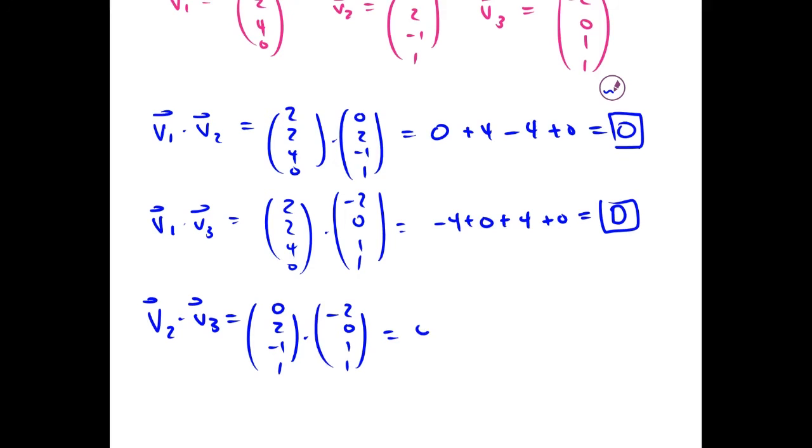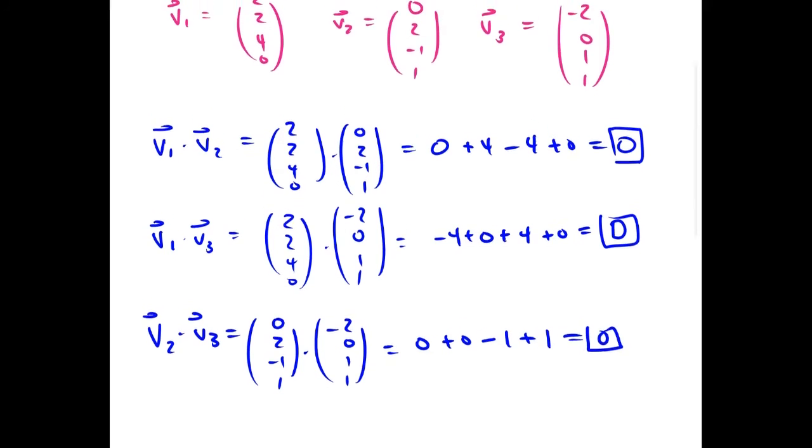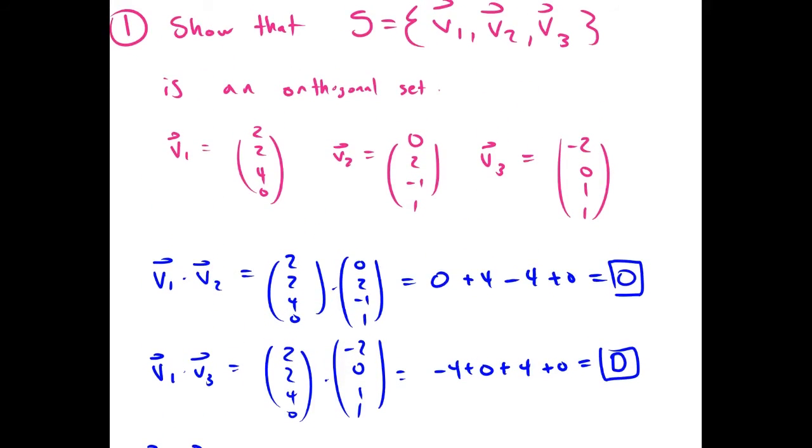And we get 0, plus 0, minus 1, plus 1, which is 0. Since these vectors are all orthogonal to each other, the set is an orthogonal set.